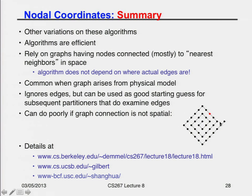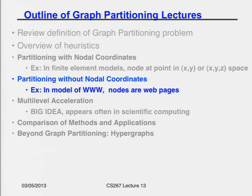Here's an example where coordinate-based partitioning does a really bad job. This graph looks like a square mesh, so I would cut it with a line through the middle — but you can see it's really just a linear graph where everybody is connected to only two neighbors. If I remove one red vertex, the graph breaks apart; that's a graph separator of size one. Obviously I would get a lousy answer using XY coordinates here as opposed to using who's connected to whom, which is what the next set of algorithms is about.